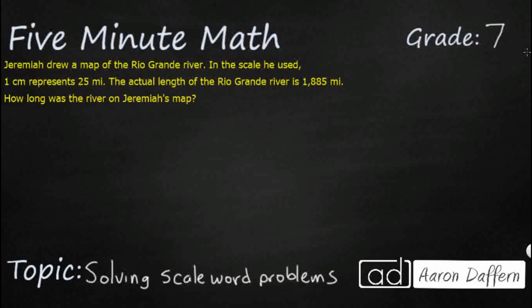So in this sample, Jeremiah is drawing a map of the Rio Grande River, and in the scale he uses one centimeter represents 25 miles. So that's going to be important for us. 1 cm - let's go ahead and just make that a fraction here so we can easily turn it into a proportion. One centimeter represents 25 miles.